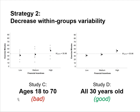Studies C and D illustrate this. Study C is bad: within treatment conditions there's great variability in ages, ranging from 18 to 70. People score very differently on the dependent variable, creating lots of variability within each treatment condition. Study D is better: everyone is exactly 30 years old, making participants homogeneous on age. Since typical 30-year-olds are similar in exercise habits, you get tight clusters of scores within each condition.